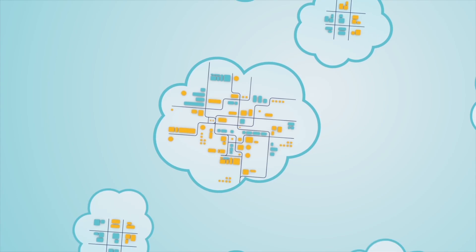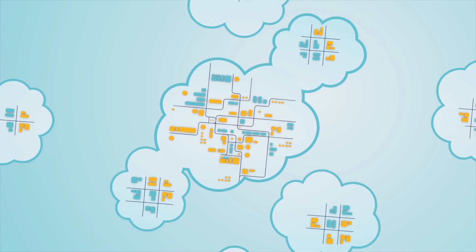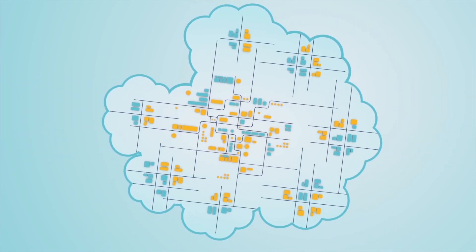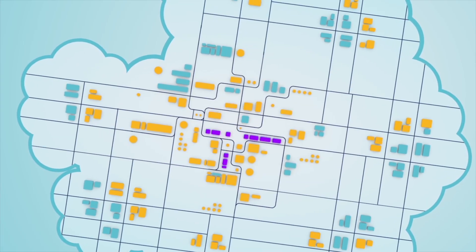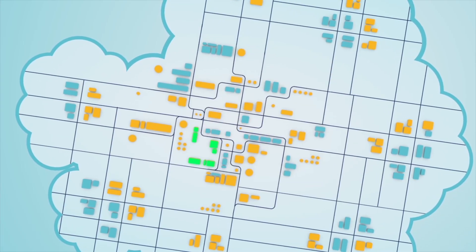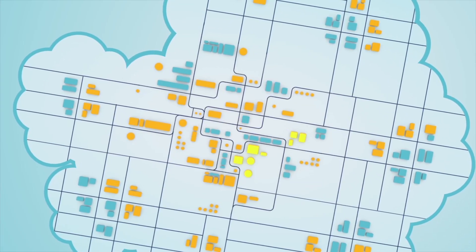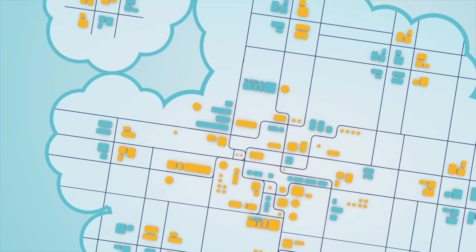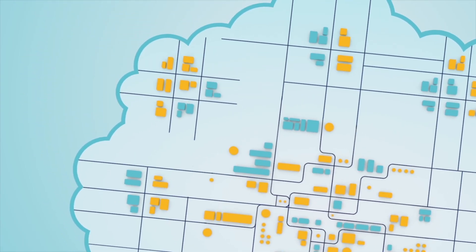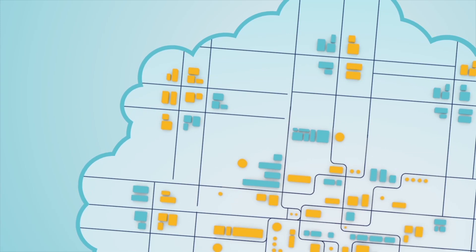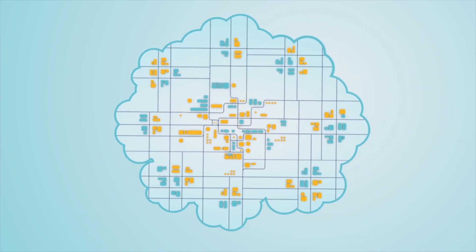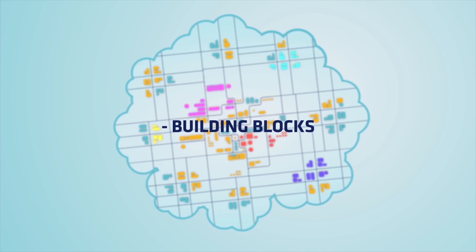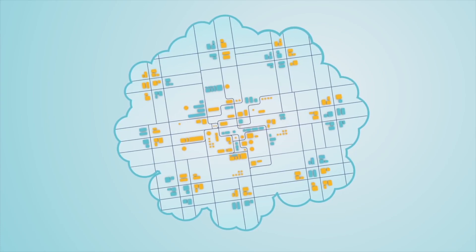The federated infrastructure leverages the capacity of the whole federation for individual applications, while the ownership remains either with organizations in the community or with third parties. By integrating these infrastructures, FiLab enables a cooperative FI innovation process which gives access to capacity, data and a catalogue of building blocks for FI applications.